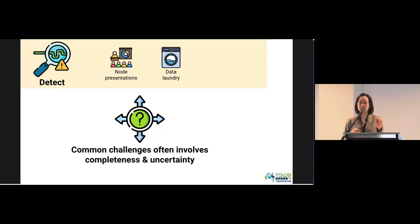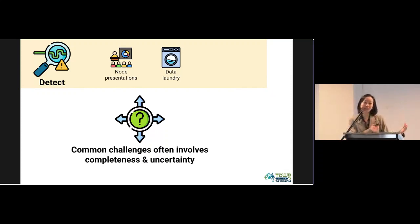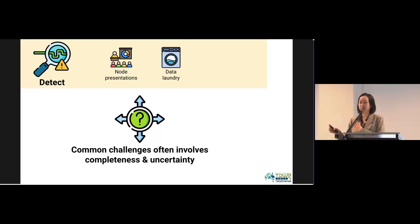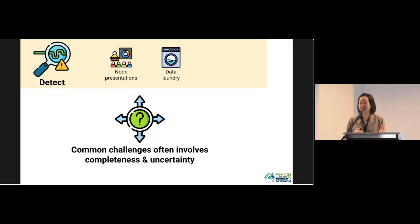Through these two approaches, we find solutions for common challenges. Very often they revolve around completeness issues — we don't have certain information from our data providers and the data is simply like that — or around uncertainty, for example not having a single value for individual count but instead a range, and the question of how to document that.